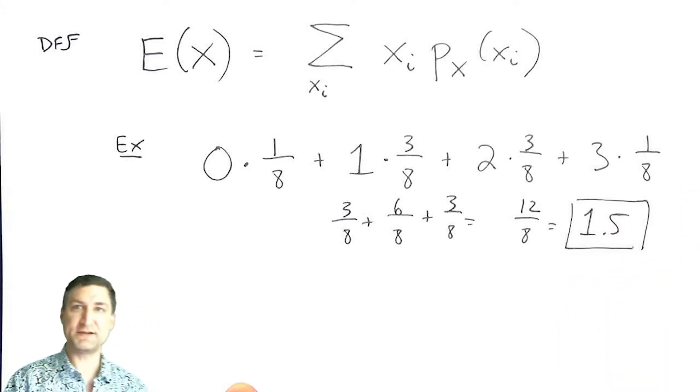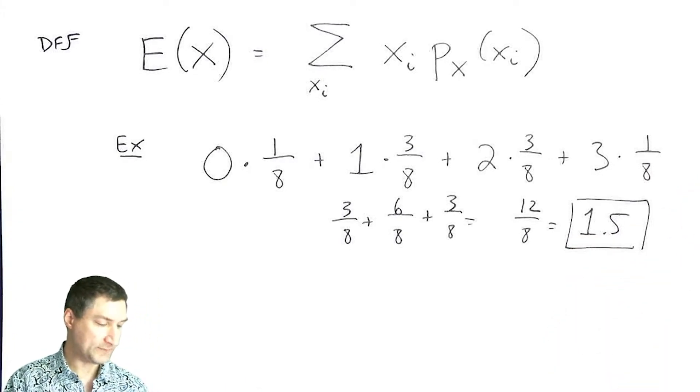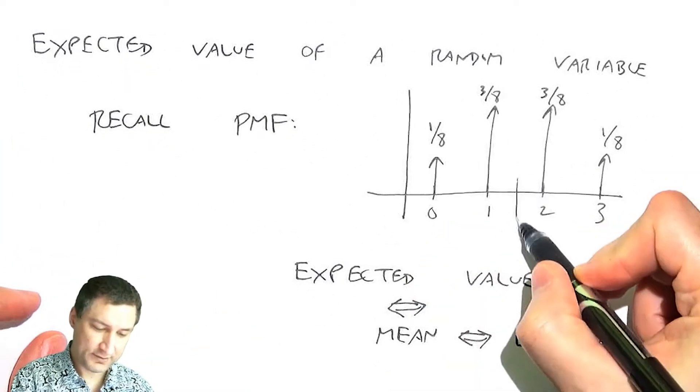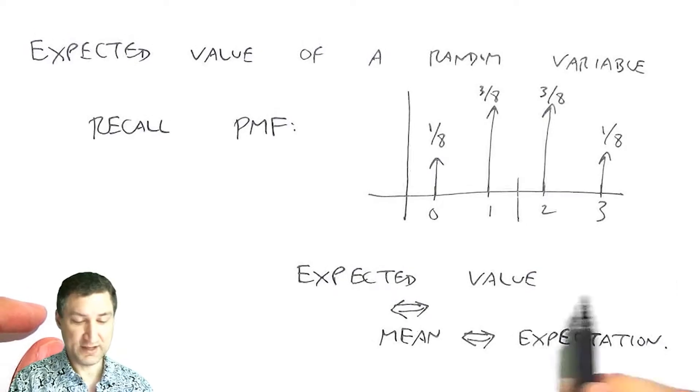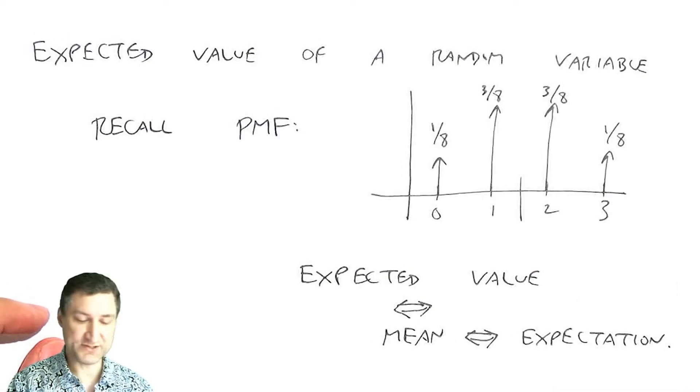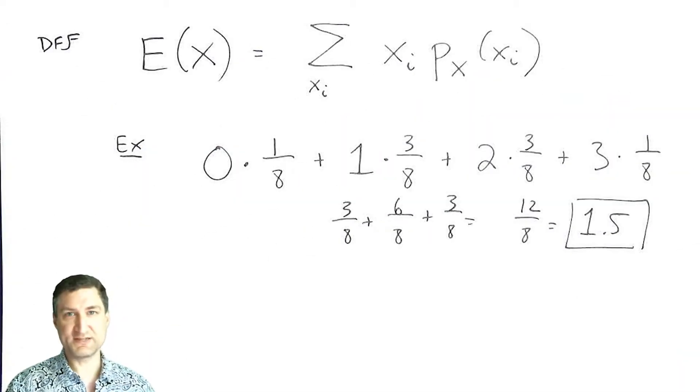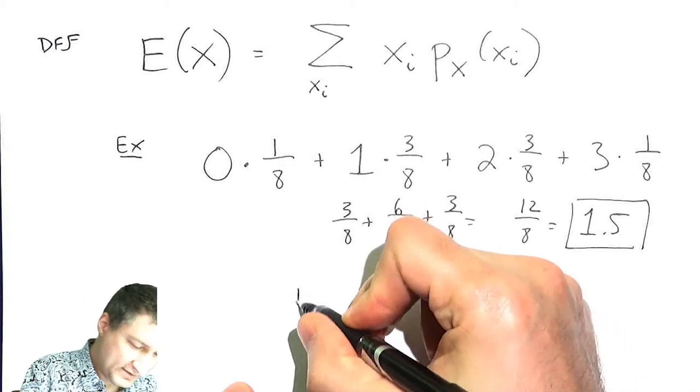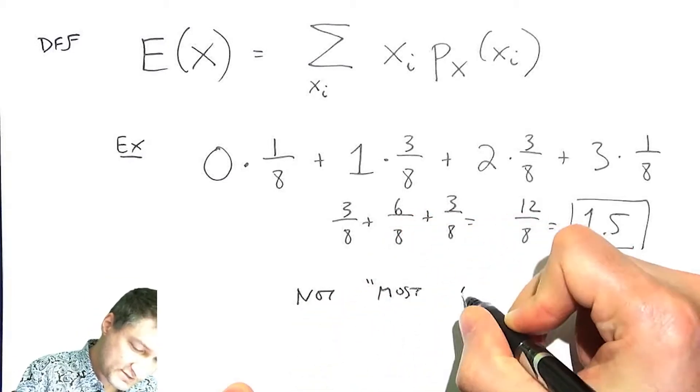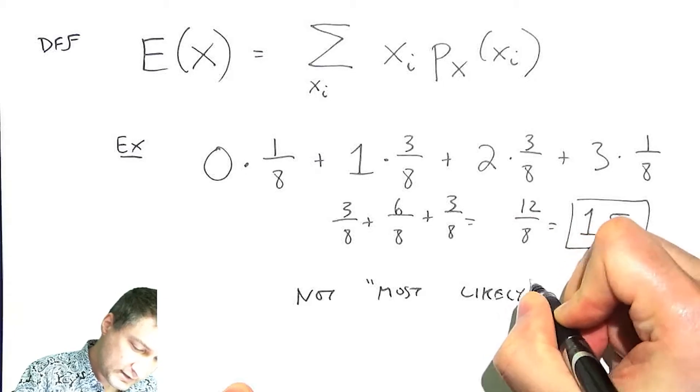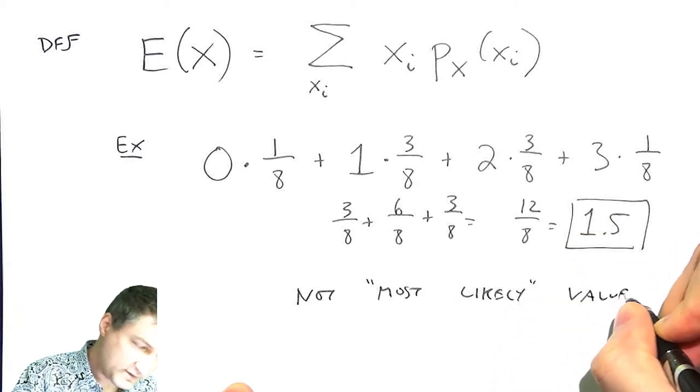Okay, so this is the expected value of that random variable. And it kind of makes sense because the PMF is symmetric around this expected value. I mean, not every PMF is symmetric, so you can't always reason like this. But in this case, it makes sense that the expected value should be in the middle. One thing to observe is that the expected value isn't actually the most likely value, because we know that I can't flip a coin three times and get 1.5 heads. So it's not exactly the most likely value, because it may not even be a value that the random variable can undertake.